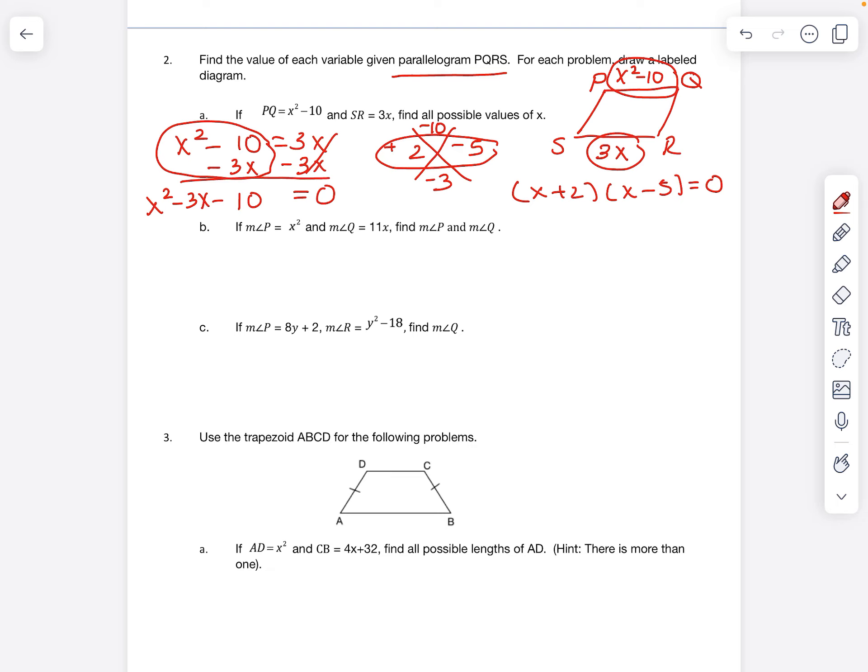Now we have to solve for x. So I have x plus 2 equals 0, x minus 5 equals 0. So minus 2, minus 2, x equals negative 2. And then x equals 5, because we can add 5. Let's try the next one. Very similar.